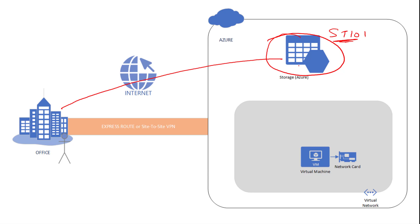Now, let's say you have sensitive data and you want to access that data from this VM. Even then, you have to go through the internet. Although Microsoft says that the connection never leaves the Microsoft backbone, you are still not on a secured private connection.